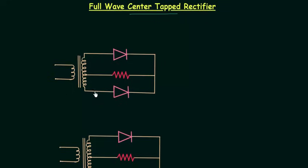On the secondary side of the transformer we have a tapping, and this tapping is in the center. For example, if we have 100 turns, then 50 turns will be on this side and 50 turns will be on this side. Because of this, we call it a center-tapped rectifier.